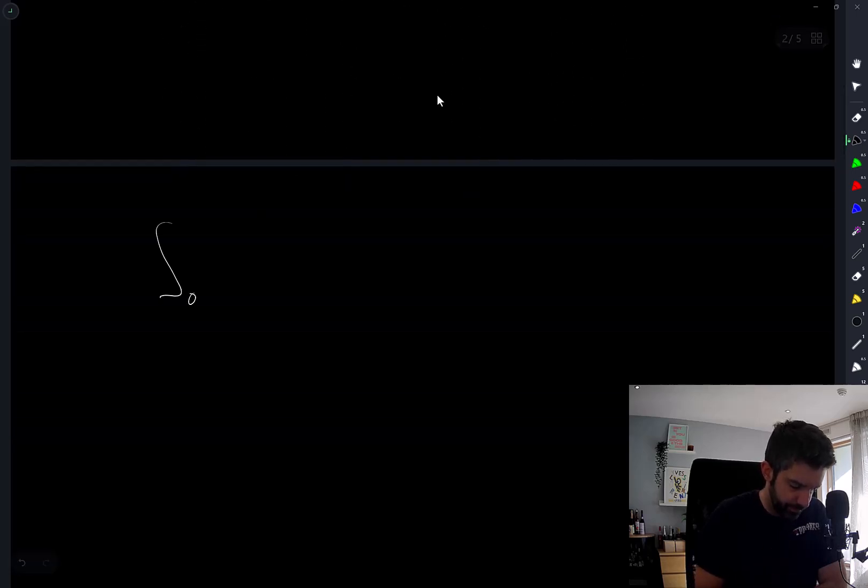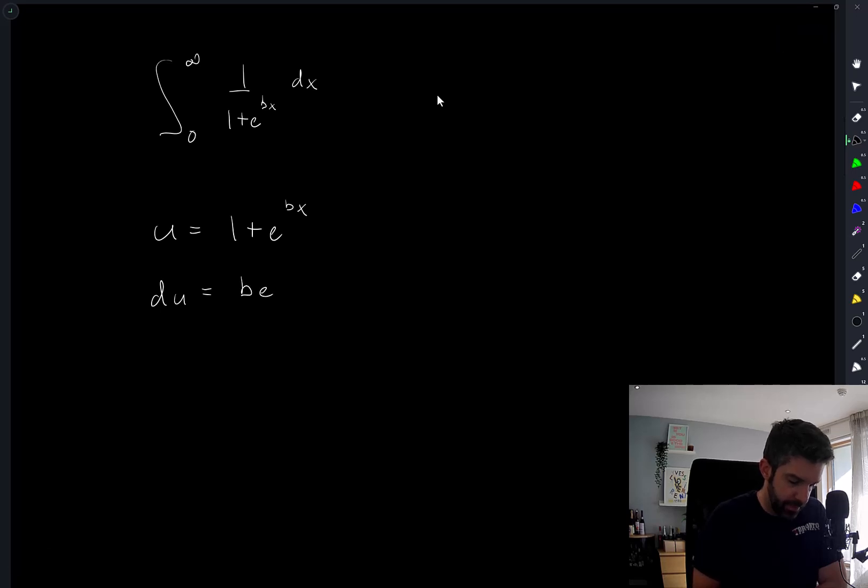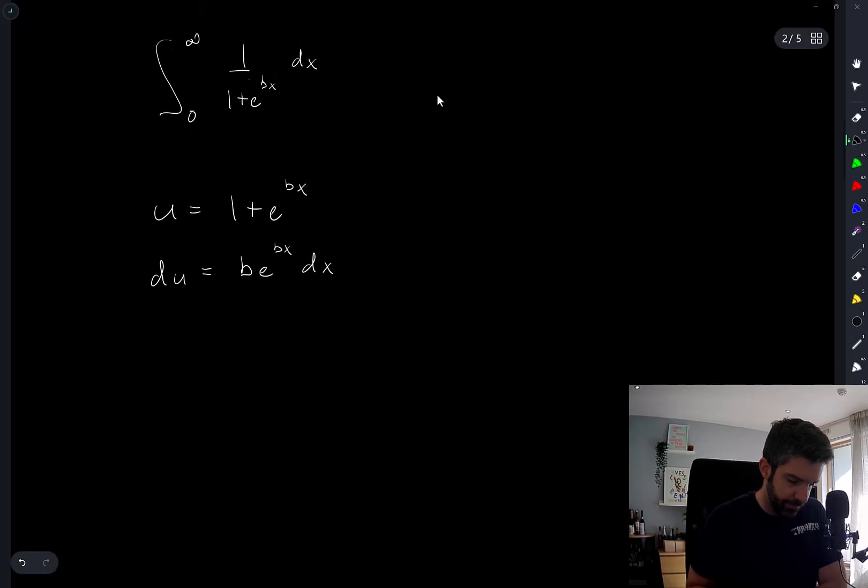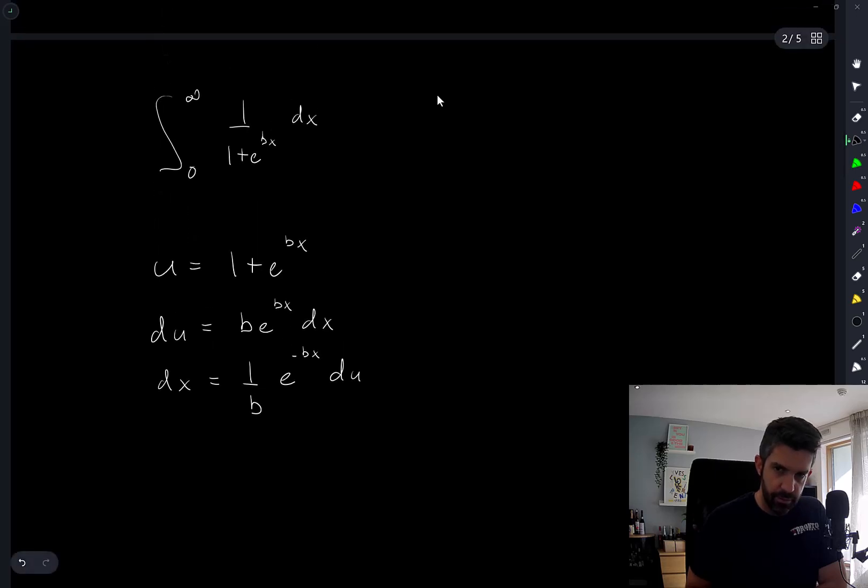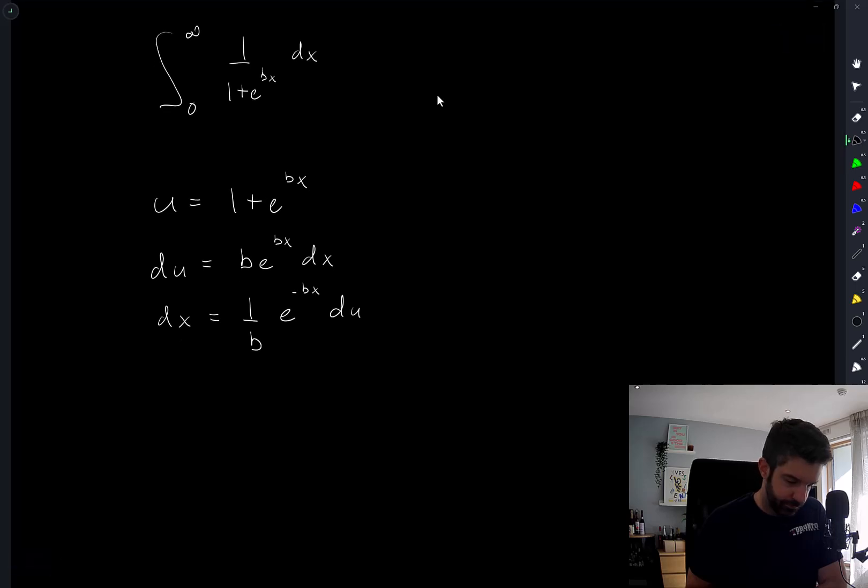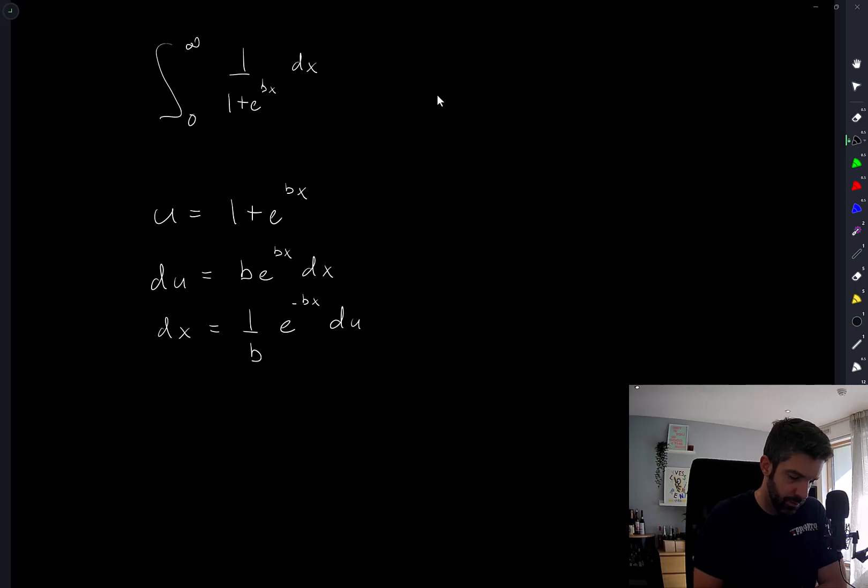Let's look at the first one. I'm going to try first with a straight substitution. U is equal to one plus e to the bx. Du is equal to be to the bx dx. So then dx is equal to one over be to the negative bx du. I don't think this is going to be too kind. Hold on, what if I can probably make a somewhat simpler substitution.